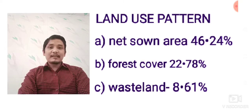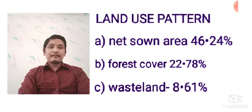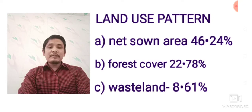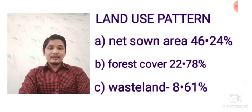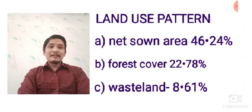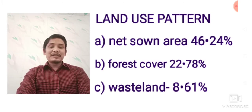Another important question: since 1960-61, forest cover in India has not increased satisfactorily — why? The government's target is 33% of land under forest cover, but we have only 22.78%. This is not satisfactory. The reasons are: number one, deforestation; number two, urbanization; and number three, people started cutting down trees and expanding agricultural activity due to growing demand for agricultural products.